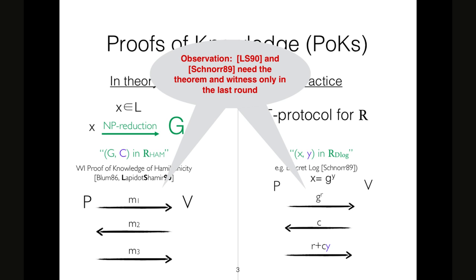An observation that will be useful thereafter in this presentation is that when the proof of knowledge is implemented by using LS19, Lapidot-Shamir 90, and also in the Schnorr protocol, to compute the first round, both theorem and witness are not needed by the prover.